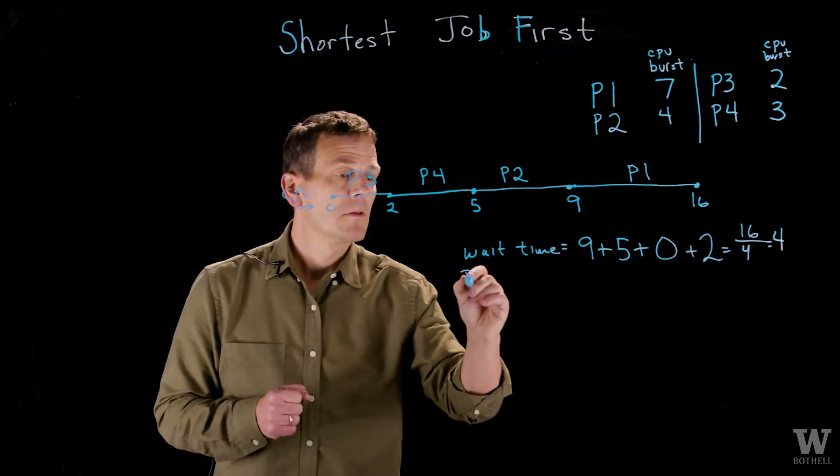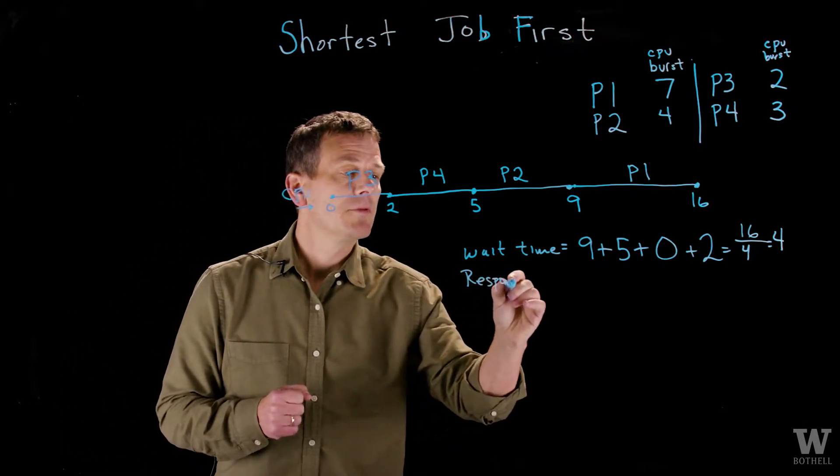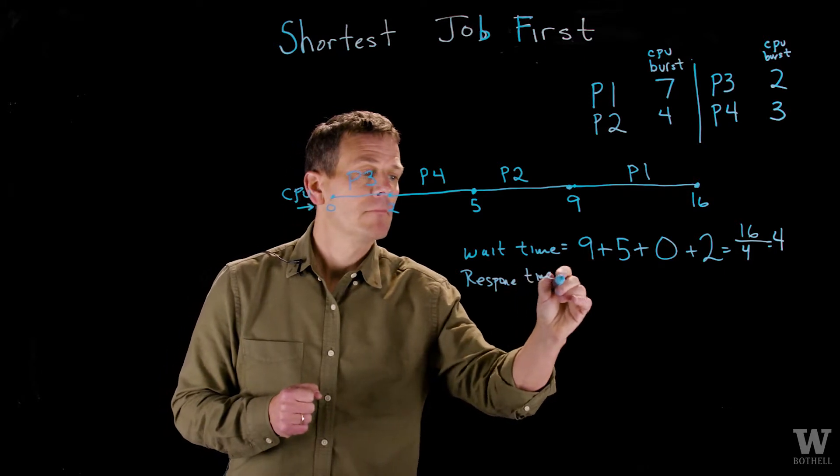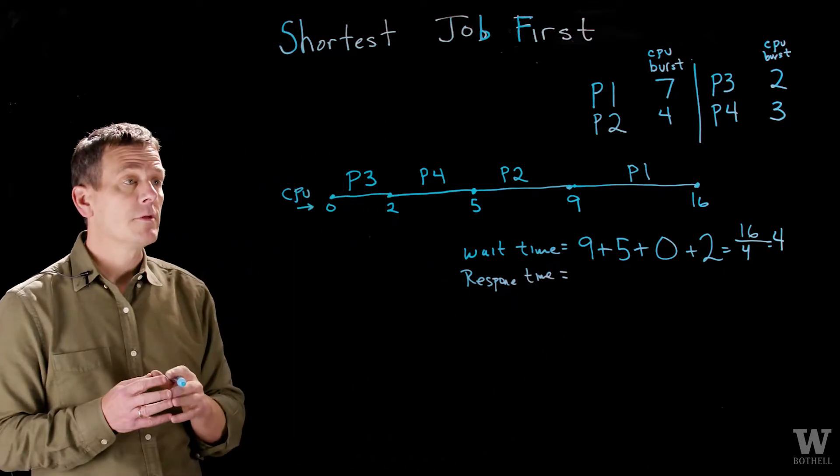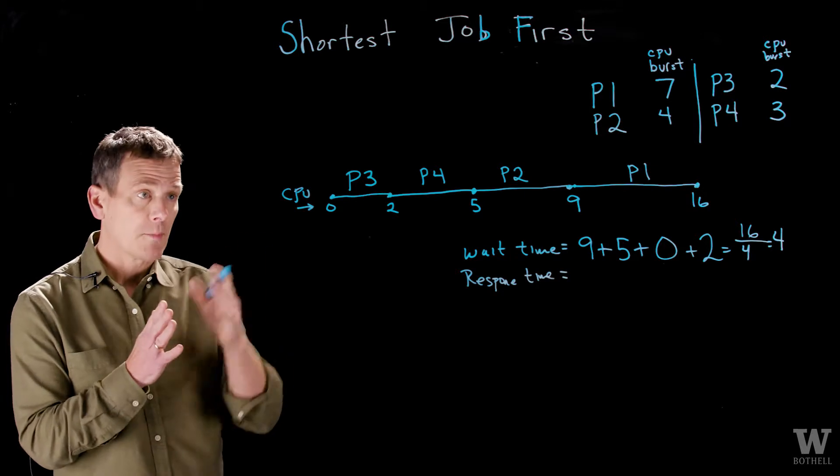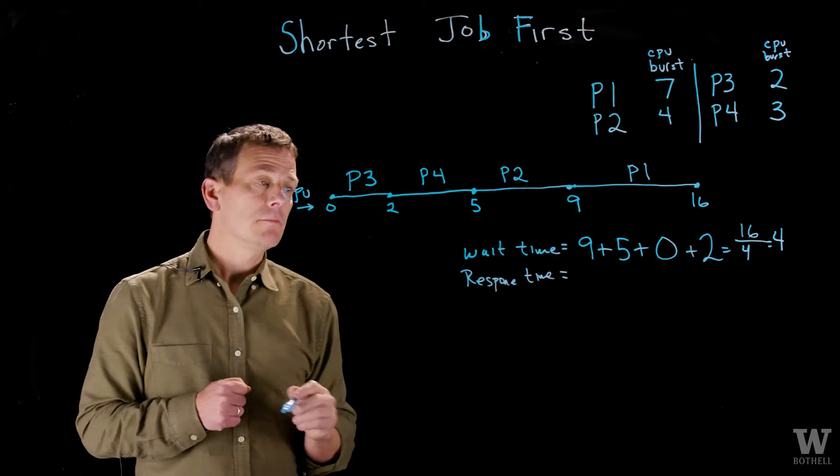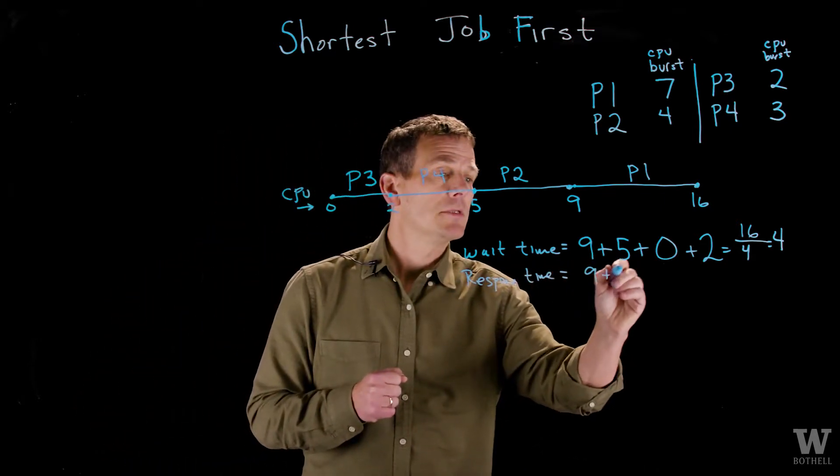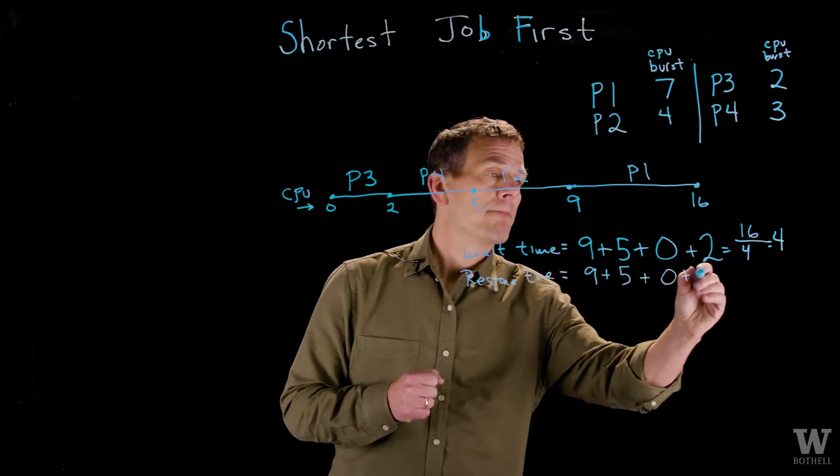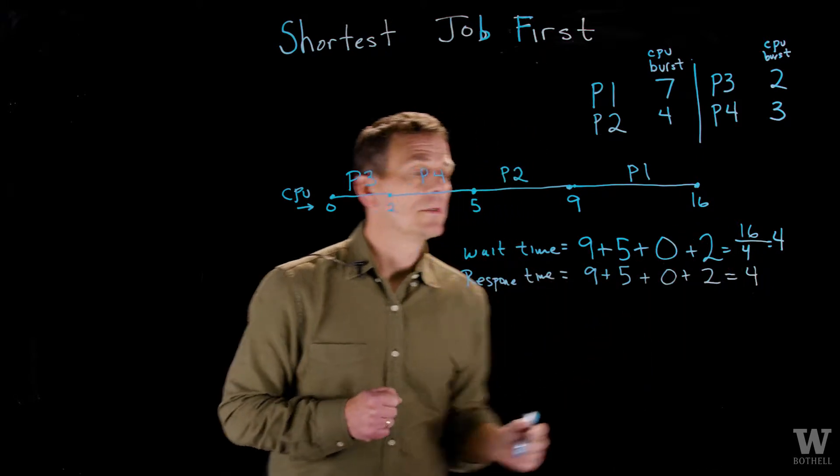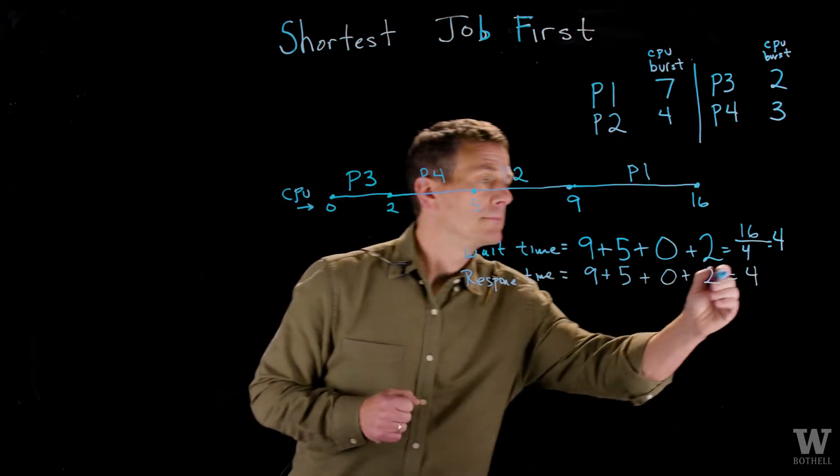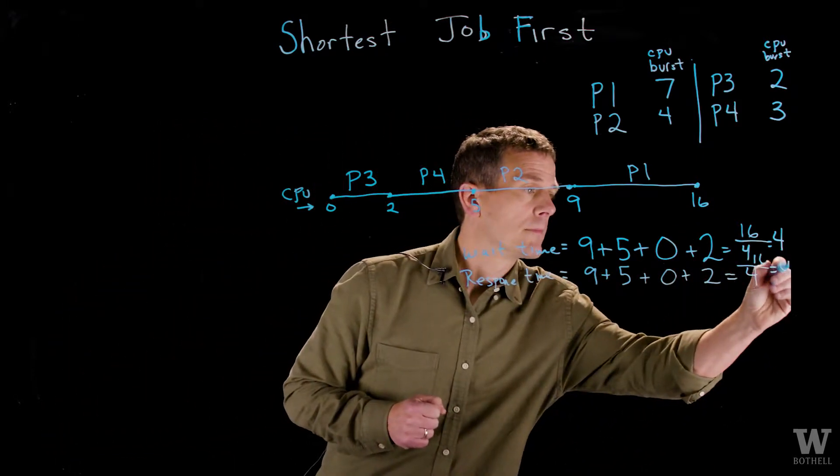Let's look at response time. Recall in a non-preemptive system, and in this case this is non-preemptive because we're allowing the process to use the CPU for as long as it wants, the wait time and the response time end up being the same. So 4 total units on average.